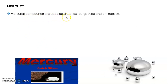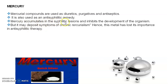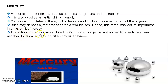The next heavy metal is mercury. Mercury compounds are used as a diuretic, purgative, and antiseptic; it is also used as an antisyphilitic remedy, as mercury accumulates in syphilitic lesions and inhibits development of the organism. However, it may deposit and cause symptoms of chronic mercurialism, which is why it has lost importance as an antisyphilitic and antiseptic therapy. The action of mercury as a diuretic, purgative, and antiseptic is attributed to its capacity to inhibit sulfhydryl enzymes.